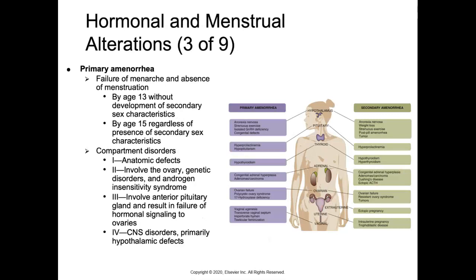Primary amenorrhea means failure of menarche and absence of menstruation — defined as no development of secondary sex characteristics by age 13, or no first period by age 15 regardless of secondary sex characteristics. Causes vary but mainly include hypothalamic dysfunction, polycystic ovarian syndrome, ovarian failure, hyperprolactinemia, or hypopituitarism. The pathophysiology can be understood through compartment disorders.